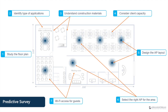After studying the floor plan and the business requirements, the installer needs to conduct a walkthrough to confirm the surveyed area and check for on-site details that are not marked on the coverage map. There are plenty of third-party software applications that can be used during the site survey process.